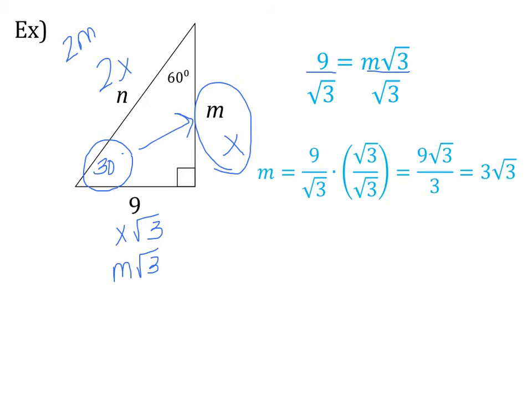Now to find n, we know that's 2x, or 2m since m and x are equal. So n = 2m. I've just found that m = 3√3, so I can plug that in: n = 2 times 3√3. Since 2 and 3 are both outside the radical, they can multiply. So the final answer is n = 6√3.